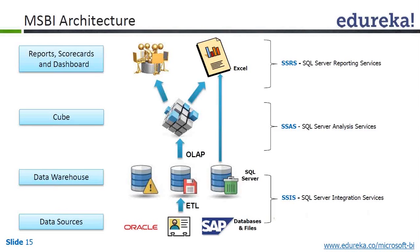SSIS is called SQL Server Integration Services. What does SQL Server Integration do? Your data may be anywhere — it may be in SAP, Oracle, a flat file, a CSV file, an Excel sheet, an ERP system, a CRM system, SharePoint — your data may be in different kinds of formats.